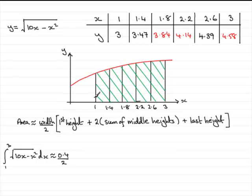Now the first height is this height here, which is the y value of 3. So just put a big square bracket there: 3 plus—now it's 2 times the sum of all the middle heights. That's this one plus this height, this height, and this height.